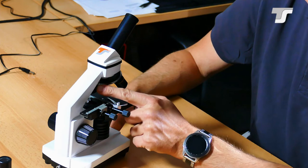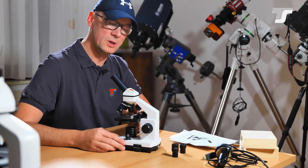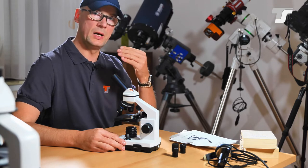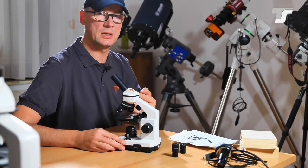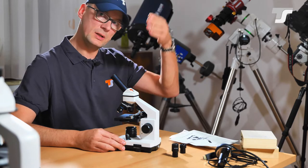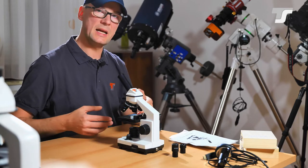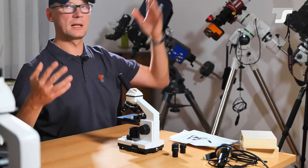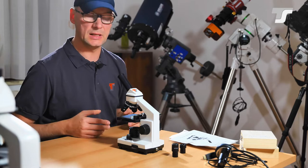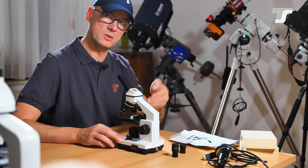Then here we have a light source. You use this light source for reflected light. If you have some opaque subjects that you want to observe then the transmitted light is not working. You need light from the top. And to get always the same lighting, different to sunlight for example, which is changing over time, you can use this light at 45 degree angle onto your subject.